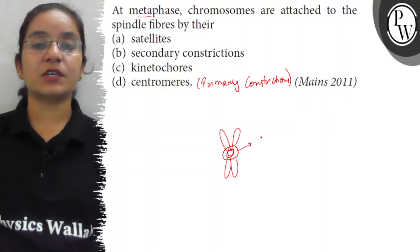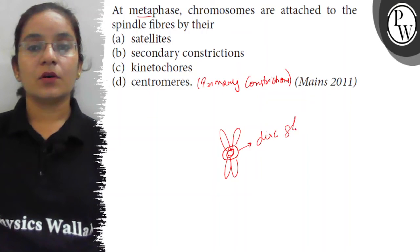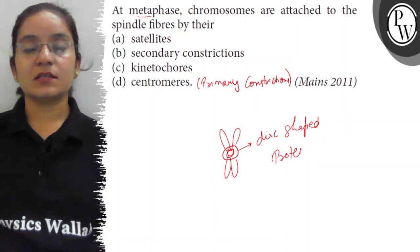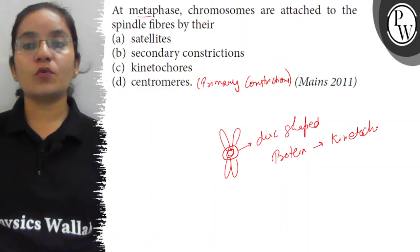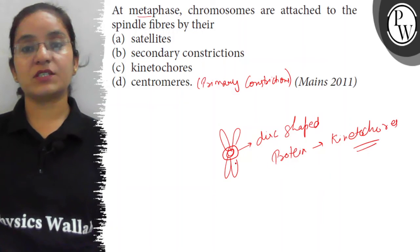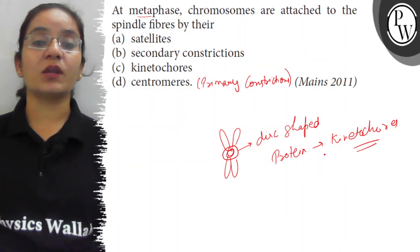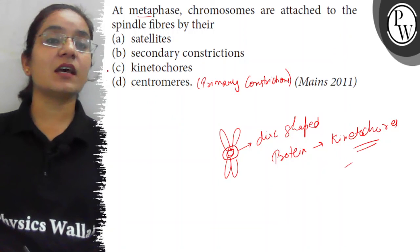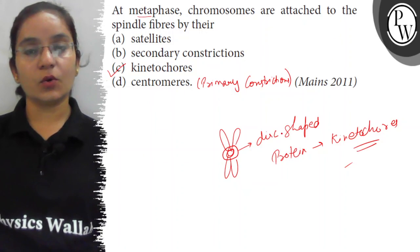Kinetochore is a disc-shaped protein structure. Via this, the chromosomes are attached to the spindle fibers during metaphase at the equatorial plate. So the correct answer here is option C. Thank you.